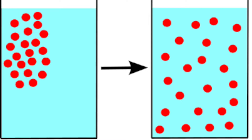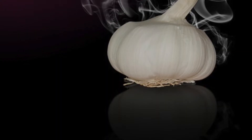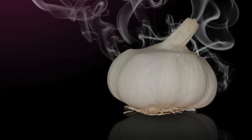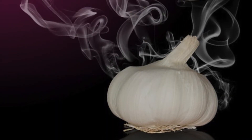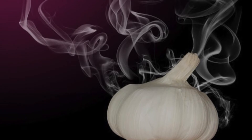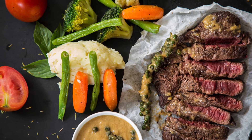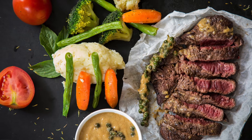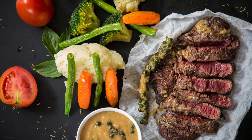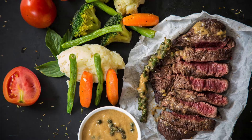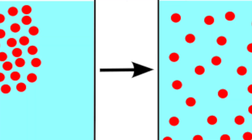If we imagine there's a smell of something, say food, you would imagine it spreading across the room. It's going to start off at a high concentration around where the food is and eventually it's going to spread out over the whole room, and that happens because of diffusion. It takes place because of the random movement of particles, and that is why diffusion takes place.